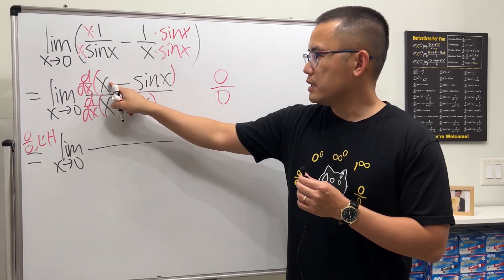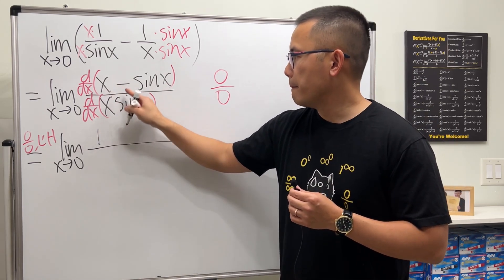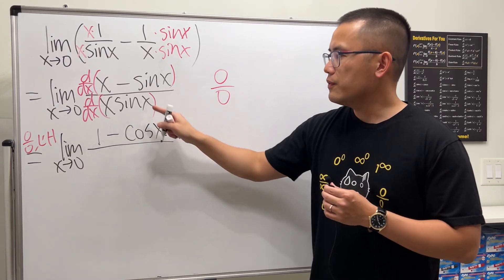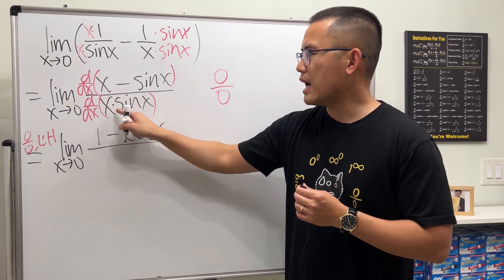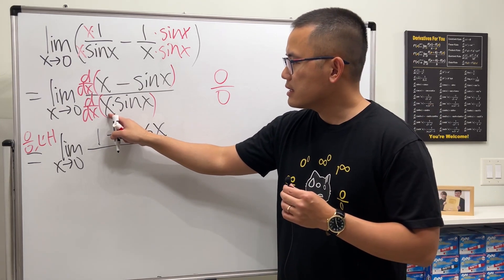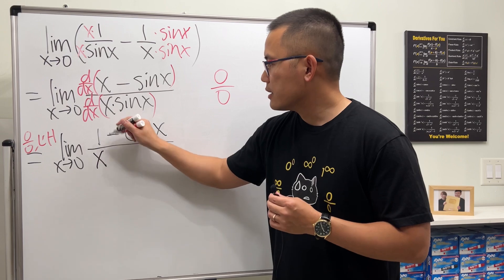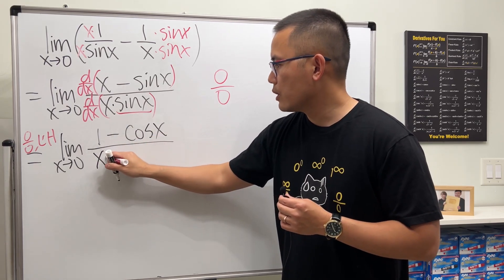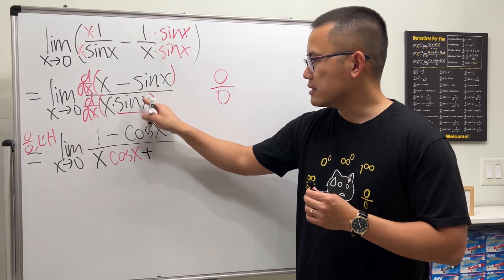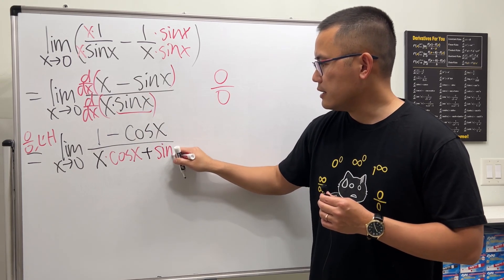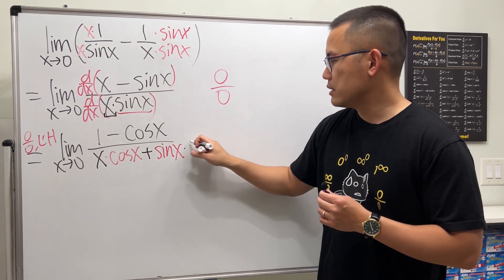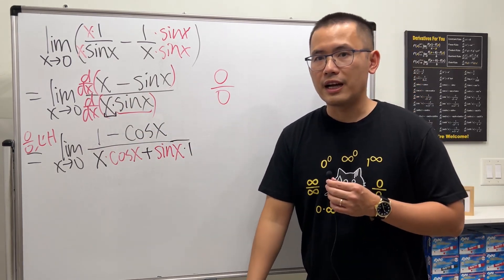For the top, the derivative of x is one minus the derivative of sin(x) is cos(x). So we have to use the product rule. Let's keep the first function times the derivative of the second, derivative of sine is cos(x), and then we add the second function which is sin(x) and we multiply by the derivative of the first, derivative of x is equal to one.